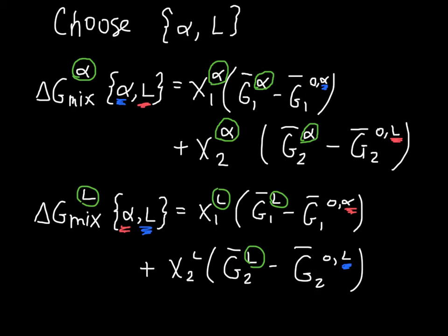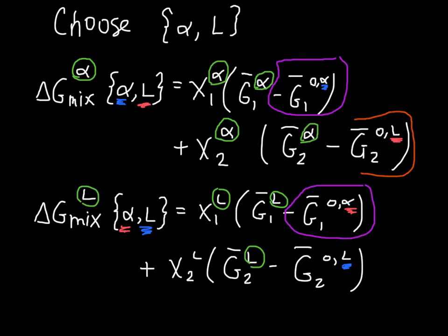We can note that in the delta G mix alpha equation and delta G mix liquid equation, the reference terms for component one match each other, and the reference terms for component two also match each other — which was not the case before. Now we can actually compare the energy of the alpha phase to the liquid phase using the same starting point and seeing which has lower energy. To do the next step, we need a little arithmetic.